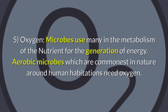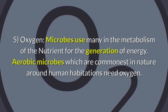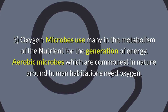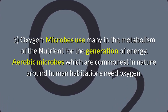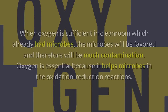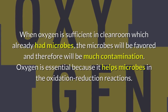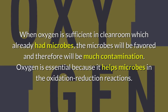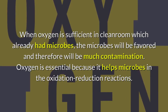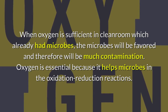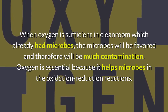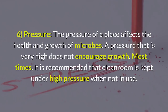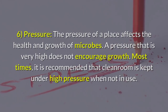Five: oxygen. Microbes use oxygen in the metabolism of nutrients for the generation of energy. Aerobic microbes, which are commonest in nature around human habitations, need oxygen. When oxygen is sufficient in a clean room which already has microbes, the microbes will be favored and there will be much contamination. Oxygen is essential because it helps microbes in the oxidation-reduction reactions.